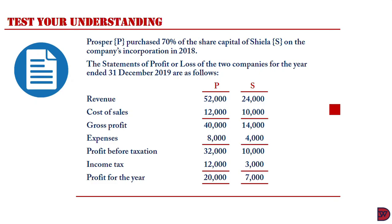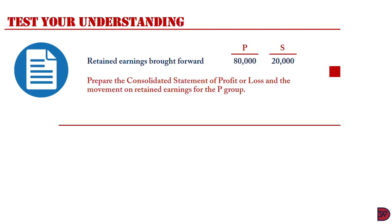We have revenue for both companies, cost of sales leading to a gross profit, expenses for both companies leading to profits before taxation, then income tax for the year, then the profits for the year. Other information: retained earnings brought forward for Prosper is $80,000 and for Sheila is $20,000. We are now to prepare the Consolidated Statement of Profit or Loss and the movement on retained earnings for the P group.